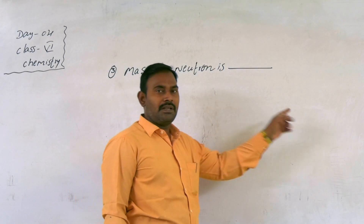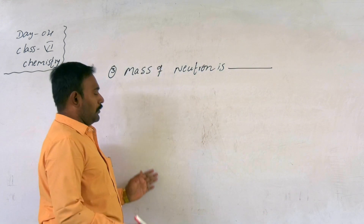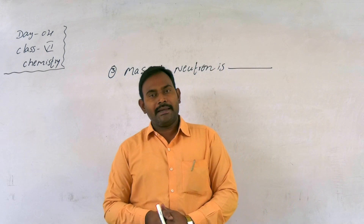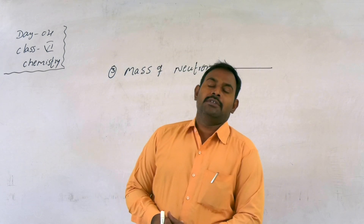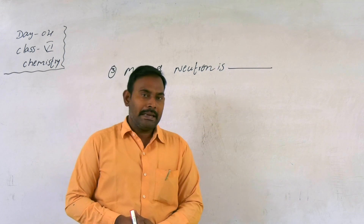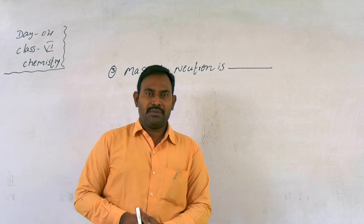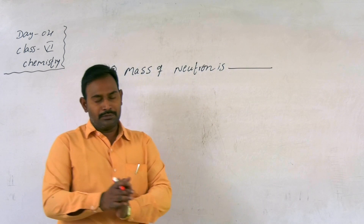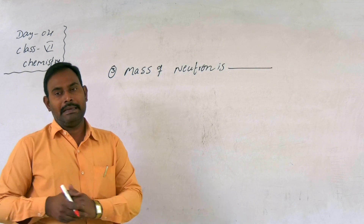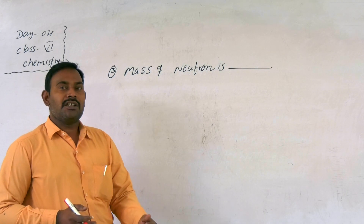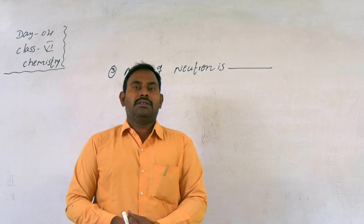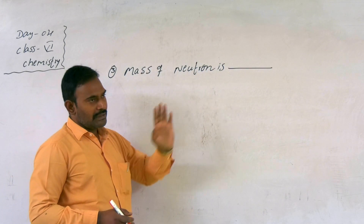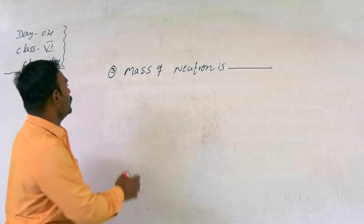Our third question is: the mass of the neutron. What is the neutron? Neutron is one of the fundamental particles present inside the atom. Neutron was discovered and named by James Chadwick. The charge of the neutron is zero — the neutron is neither positive nor negative, it is a chargeless particle. Neutron has a mass approximately equal to the mass of the proton.